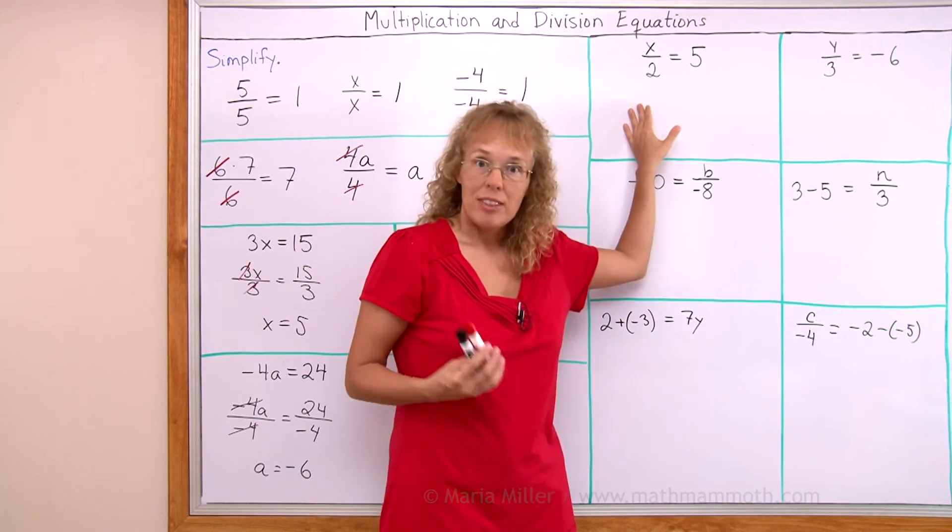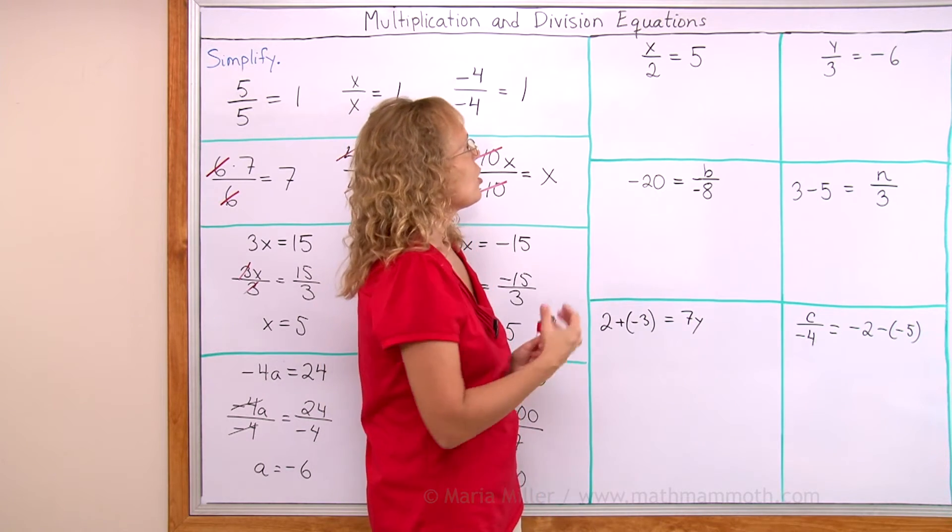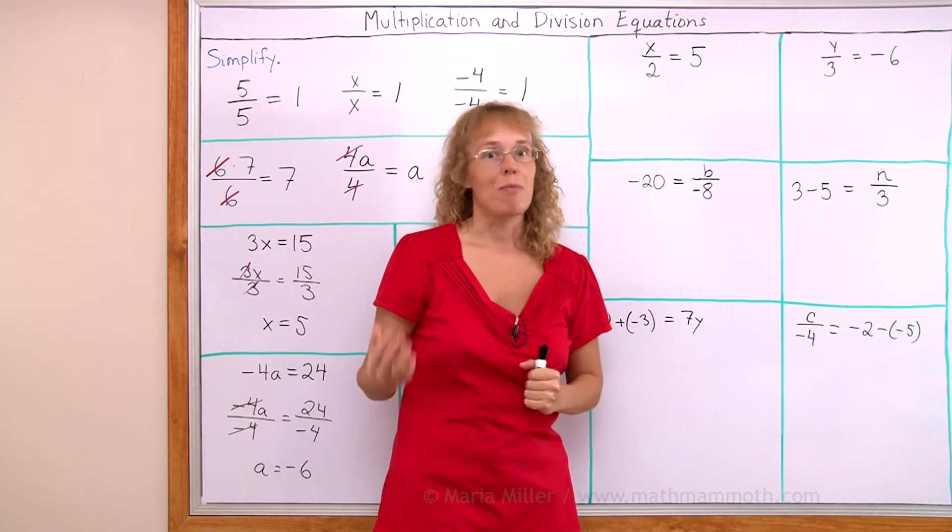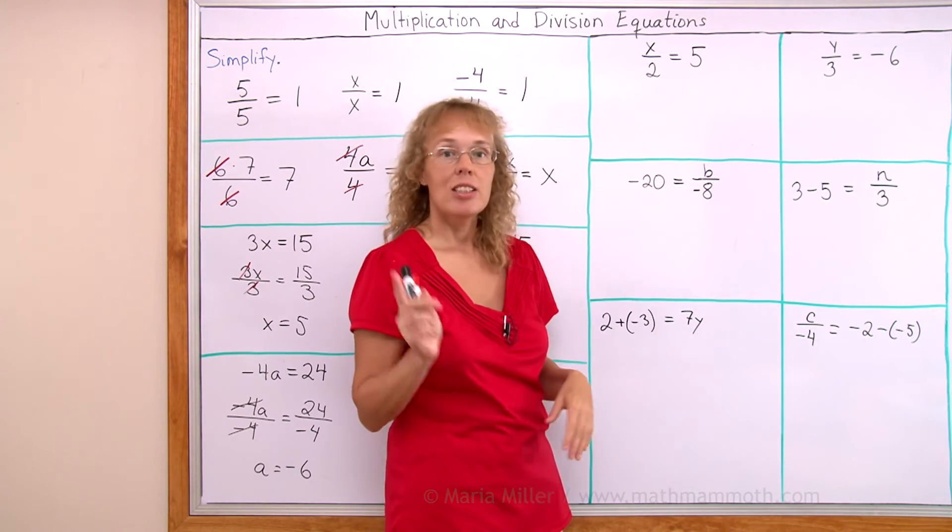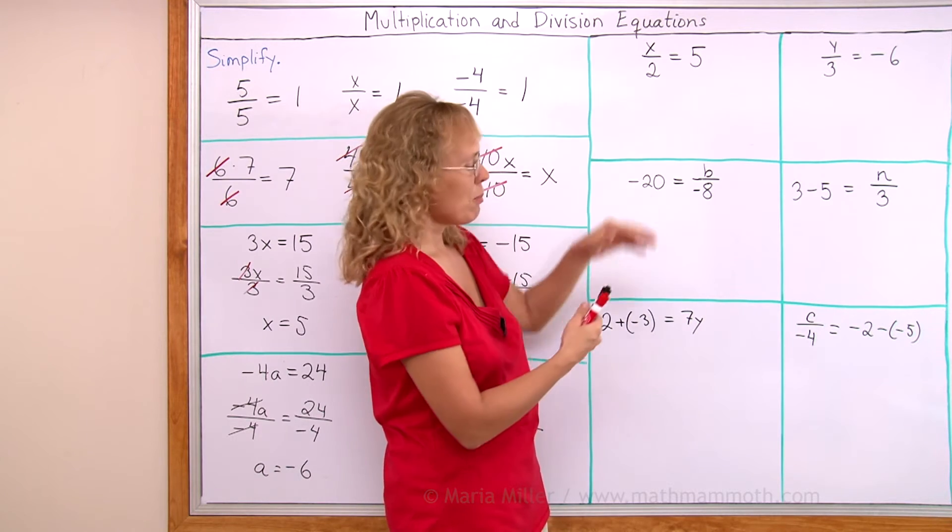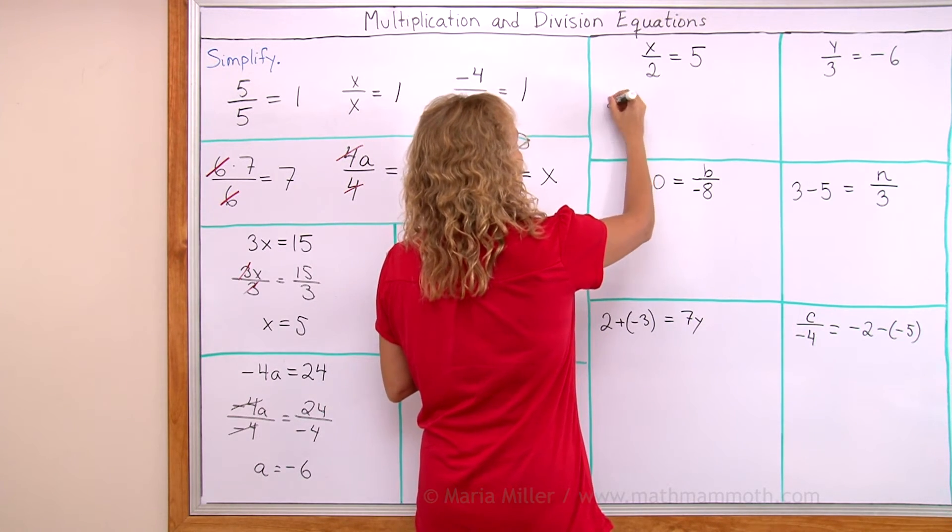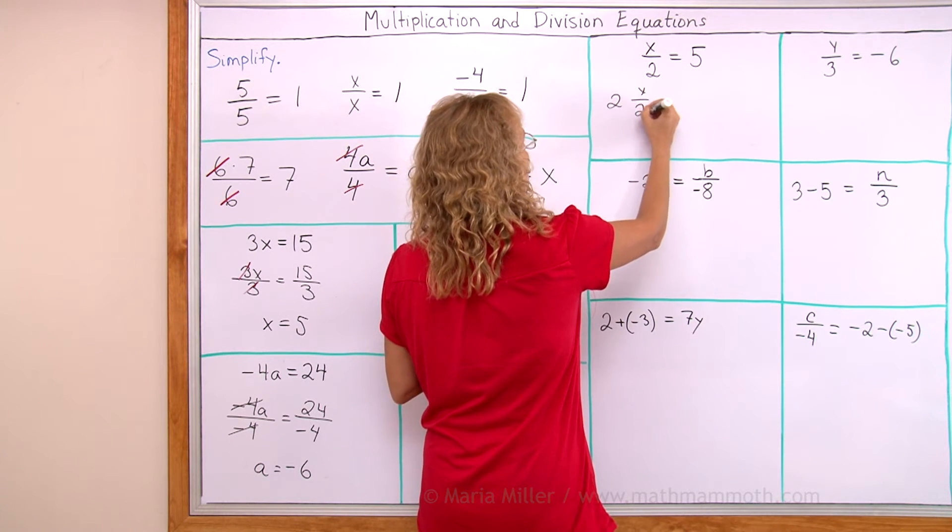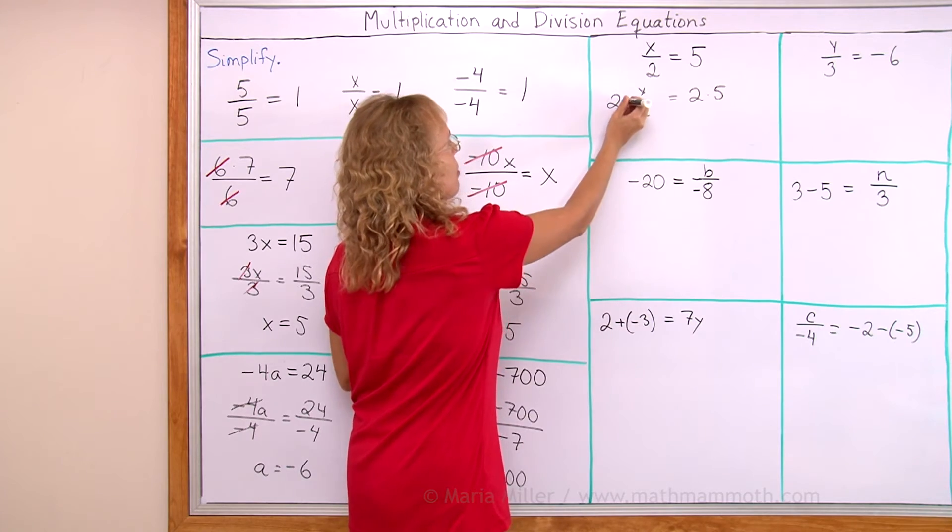Now, here we have division equations. The variable is divided by something. And to undo the division by 2, we multiply. We need to multiply both sides here by 2. Right! And that undoes the division by 2. Let me show you how it looks like. I multiply both sides by 2. Like that. This is multiplication. Okay?